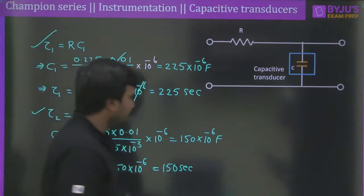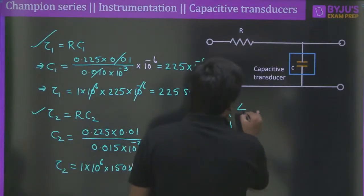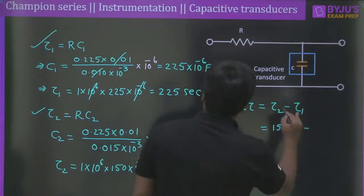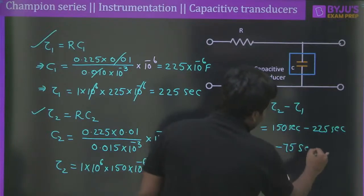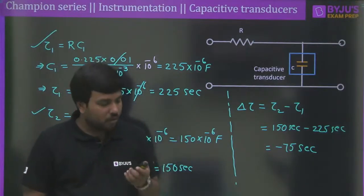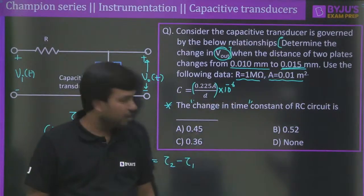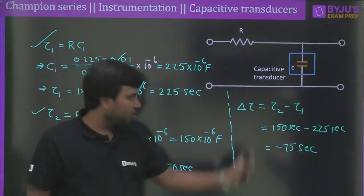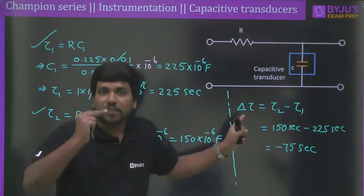The change in time constant is Δτ = τ₂ − τ₁ = 150 − 225 = −75 seconds. We can say the time constant is reduced by 75 seconds. This is the final answer. Students watching later can post doubts in the comment section.